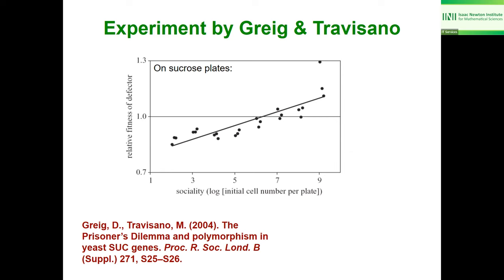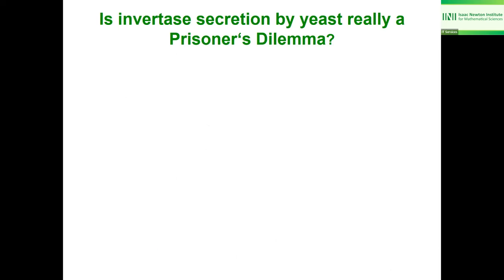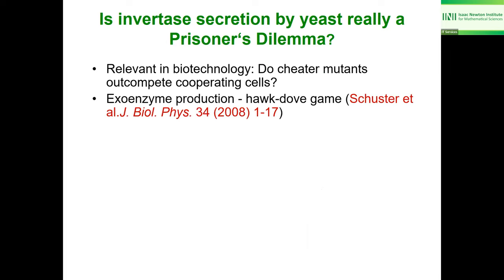An experiment by Gore and Travisano considered two types of yeast cells: those that secrete invertase (splitting sucrose into glucose), and cheater cells that don't secrete invertase but benefit from the glucose produced by others. They found that it depends on what they call 'sociality' — essentially cell density. At high cell density, defectors have an advantage; at low density, cooperators have an advantage. The paper's title invokes the prisoner's dilemma.